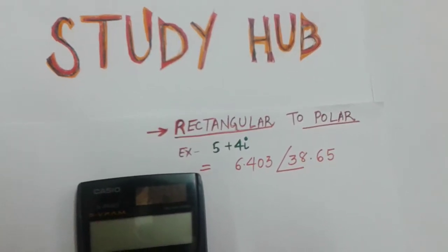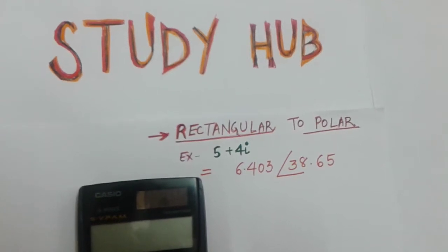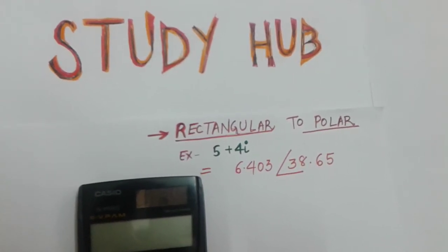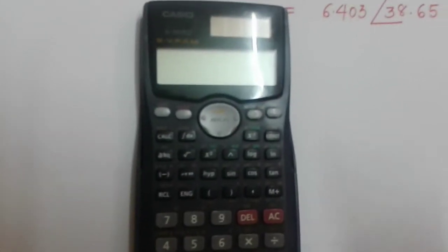In rectangular form, 5 plus 4i. I have to convert it into polar form, means magnitude and angle form, means r angle theta form. So first, this is my calculator.